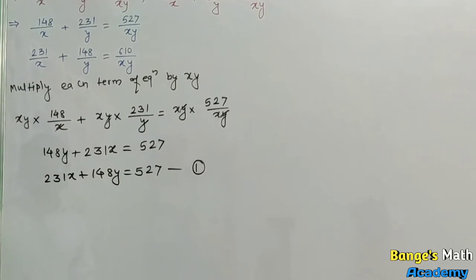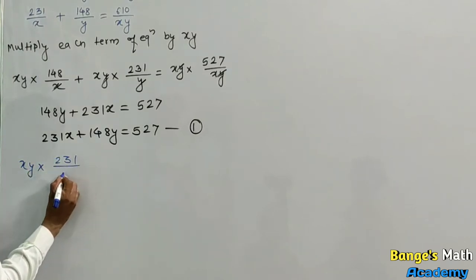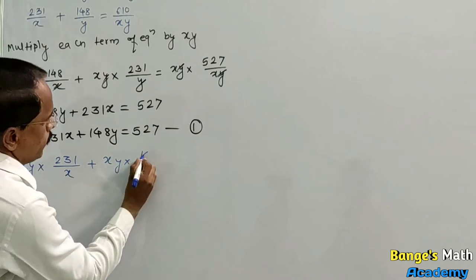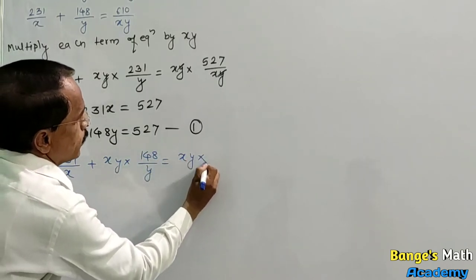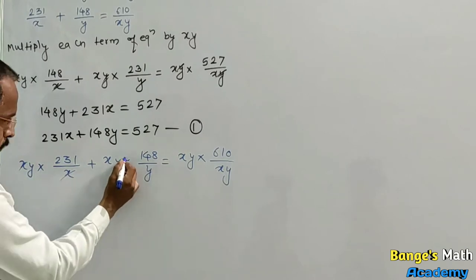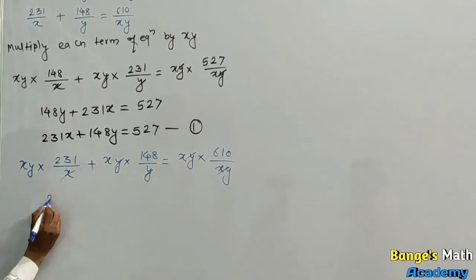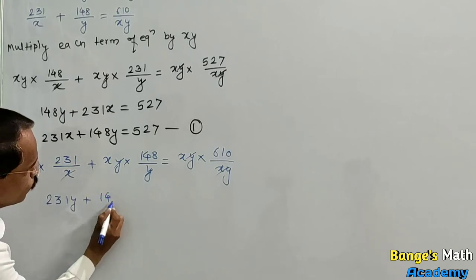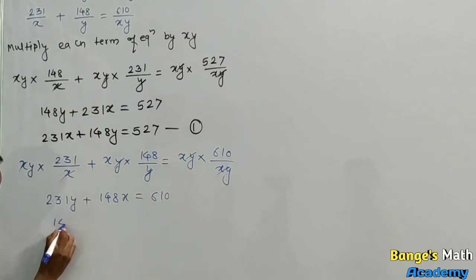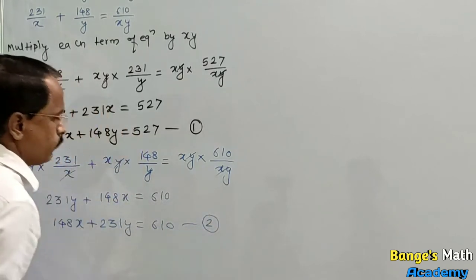Similarly, multiply the second equation by xy: xy into 231 upon x gives 231y, xy into 148 upon y gives 148x, and xy into 610 upon xy cancels. So we get 231y plus 148x equal to 610, written as 148x plus 231y equal to 610. Equation number 2.